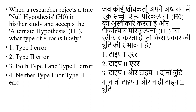When a researcher rejects a true null hypothesis (H0) in their study and accepts the alternate hypothesis (H1), what type of error is likely? The first option is Type 1 error, the second is Type 2 error, the third is both Type 1 and Type 2 error.